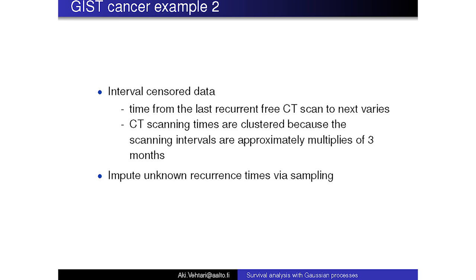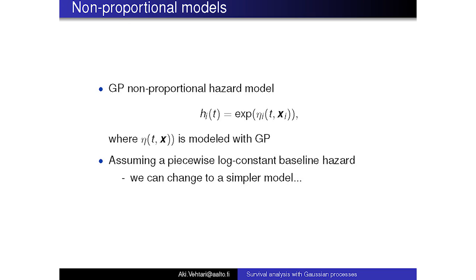This case was also complicated because we had interval-censored data — they used CT scans to try to find out if the tumor had reoccurred, but there was variation in the interval between scannings. So we know only that when they scan and it shows a reoccurrence, it actually reoccurred between some time interval. This complicated the computation a little, but we can still use the GP approach.